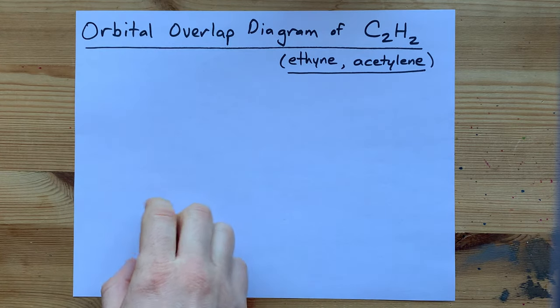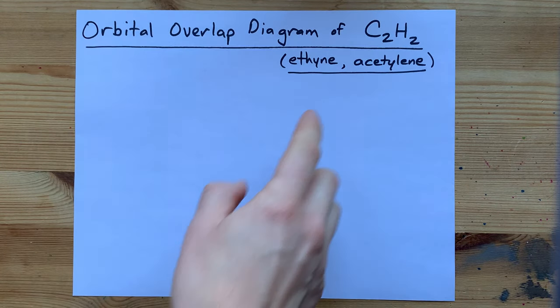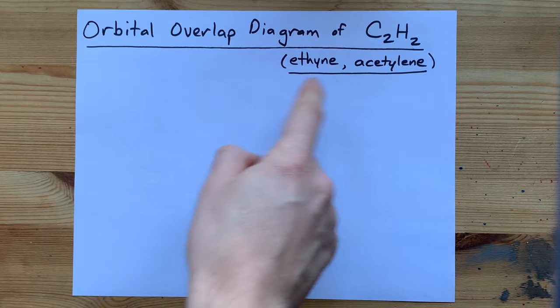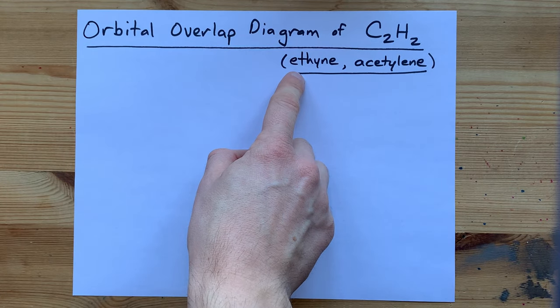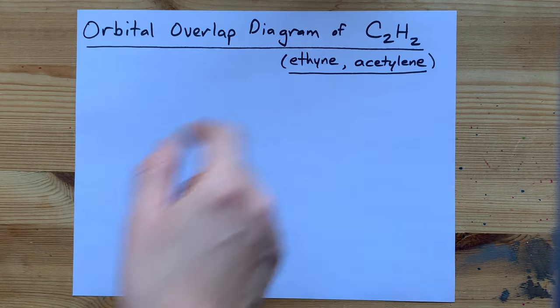Oh, we got a good one for you today. The orbital overlap diagram of C2H2, which is also known as ethine, but also as acetylene.